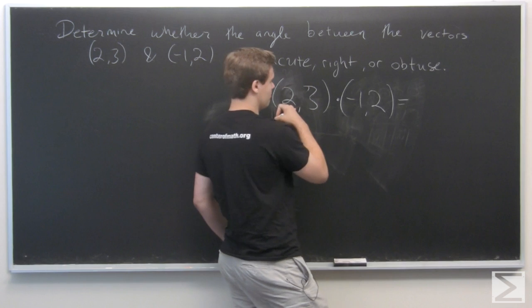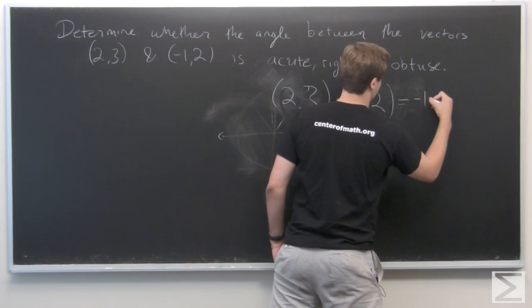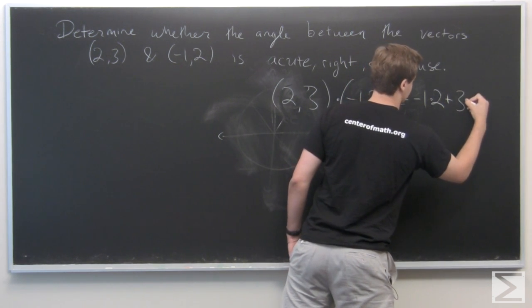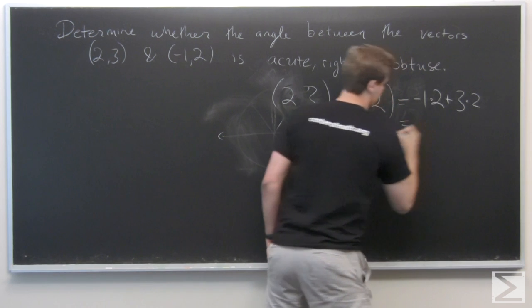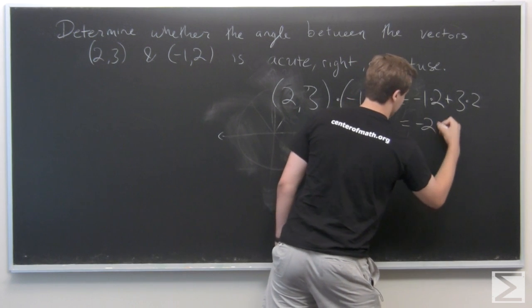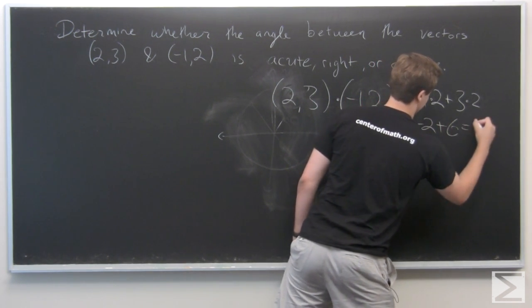so it'd be minus 1 times 2 plus 3 times 2. That is minus 2 plus 6, or 4.